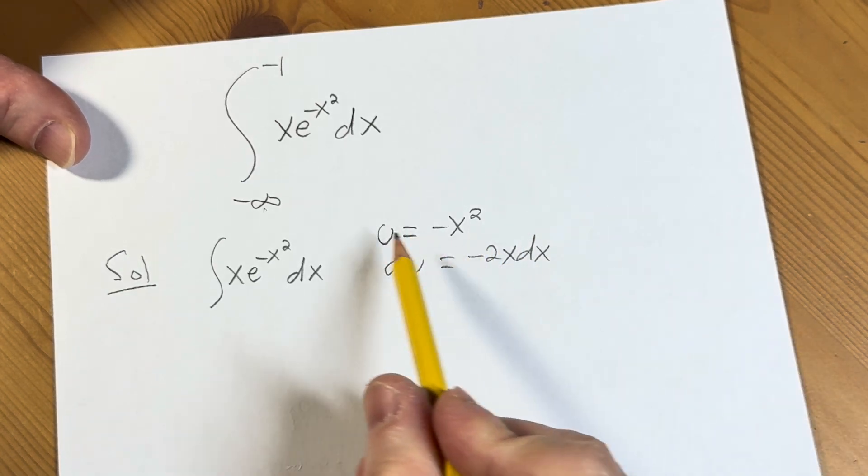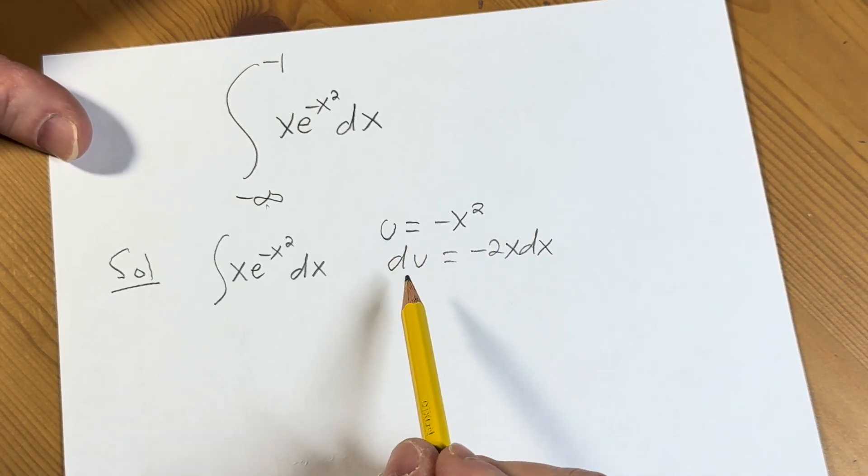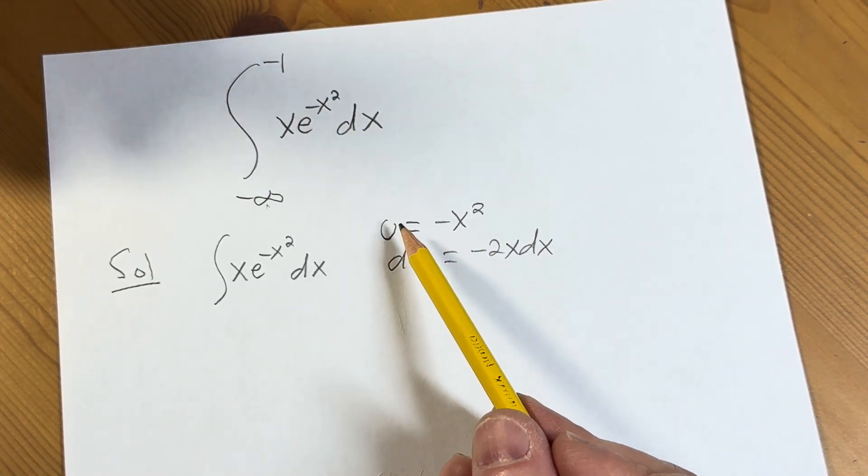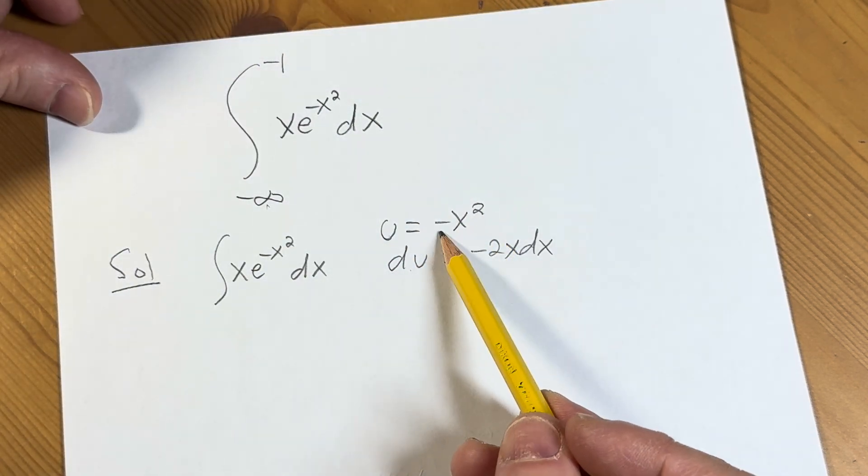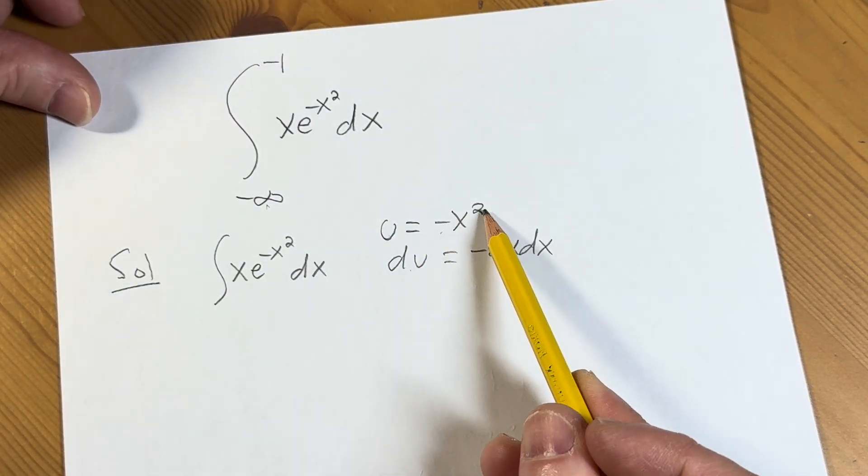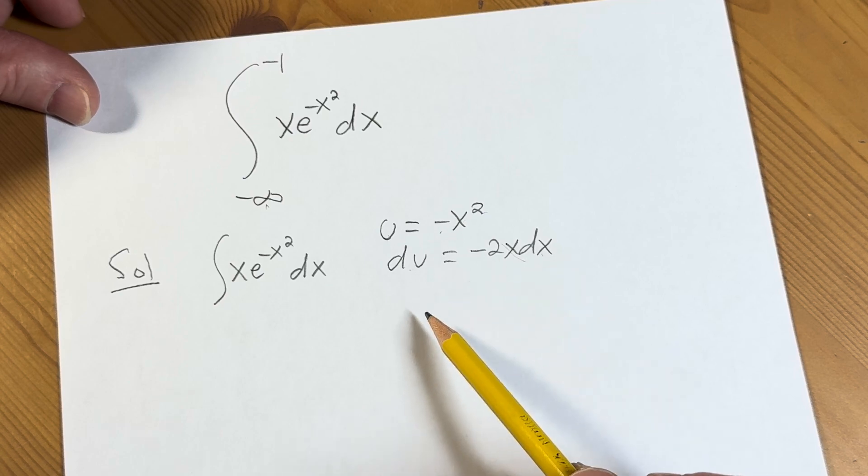All we did here was take the derivative of both sides using differential notation. The derivative of u is 1 so you just write du. Here you bring down the 2, subtract 1 from the exponent so you get negative 2x, and then you put down the dx.